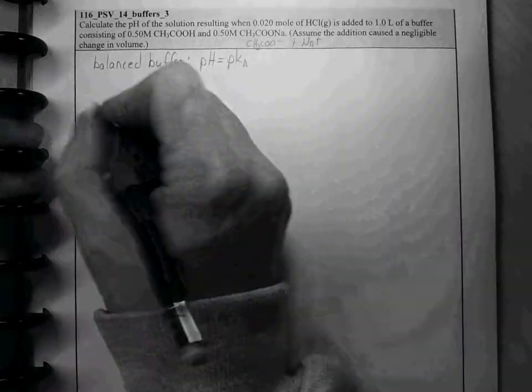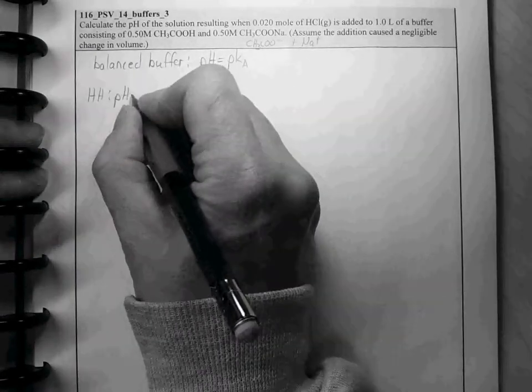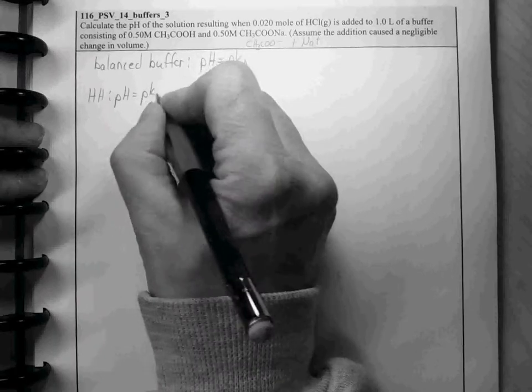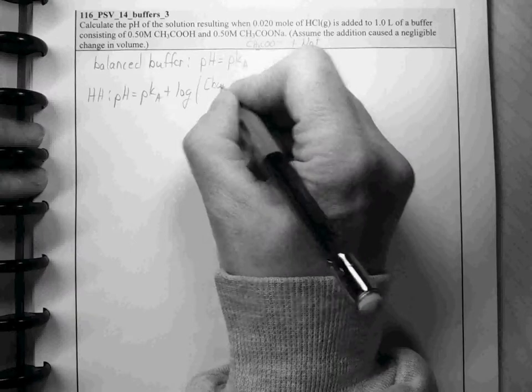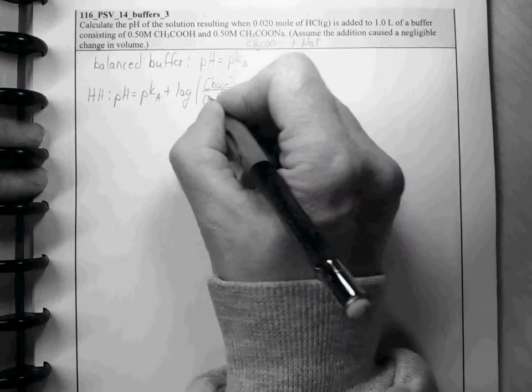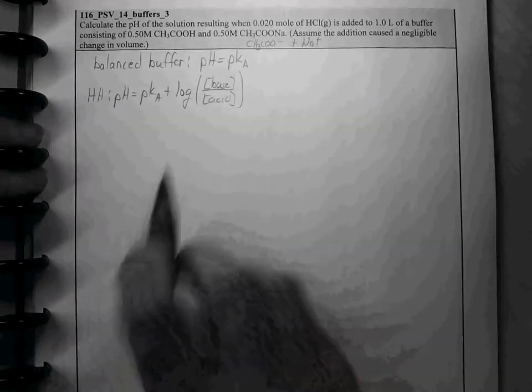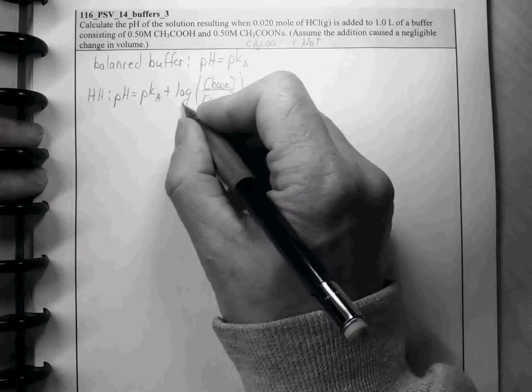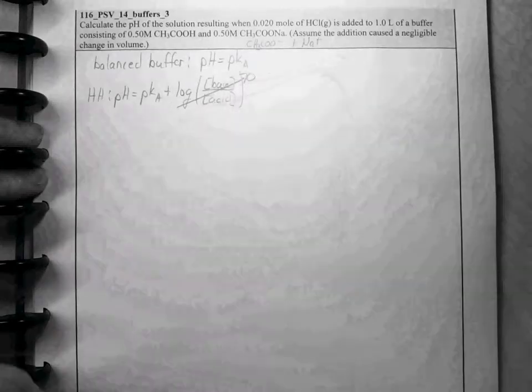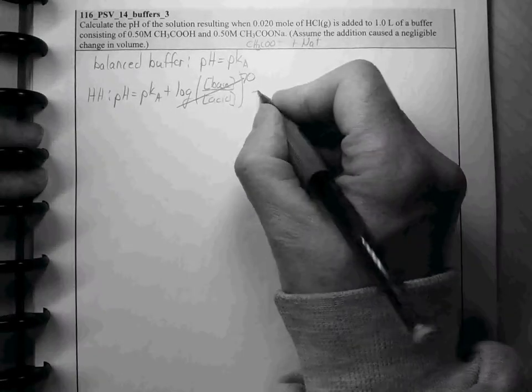This is because when we use Henderson-Hasselbalch, pH is equal to pKa plus log of our base to acid. In a balanced buffer, the concentration of the base and the acid is the same, so we're going to take the log of 1, and the log of 1 is equal to 0. This whole thing goes to 0. And that's why, with a balanced buffer, pH is equal to pKa.